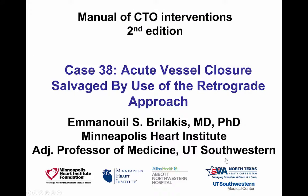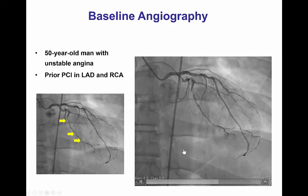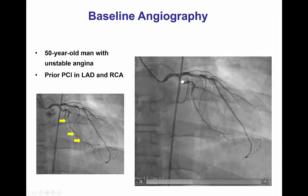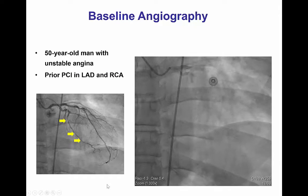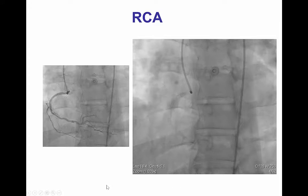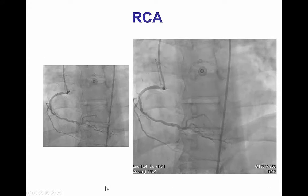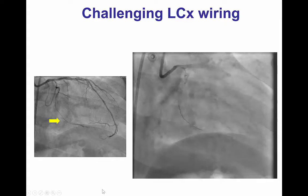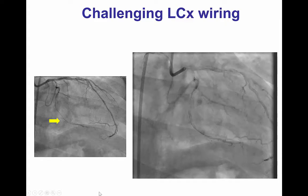This was a 50-year-old man who presented with unstable angina and was found to have a high-grade lesion in the second obtuse marginal in the proximal circumflex. There was no significant disease in the LAD, only moderate disease in the right coronary artery, hence the circumflex was the target vessel considered to be the culprit for the patient's presentation.